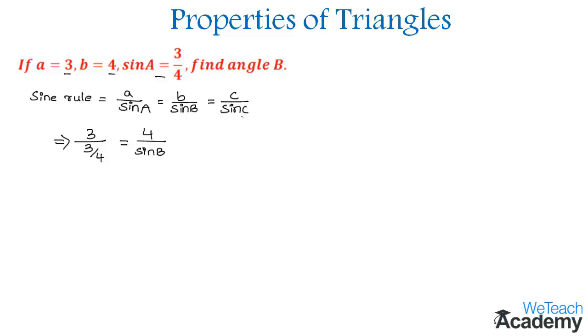We are not in need of sin C and C, so we are not considering that term. By cross multiplying, we get 3 sin B = 4 × (3/4).